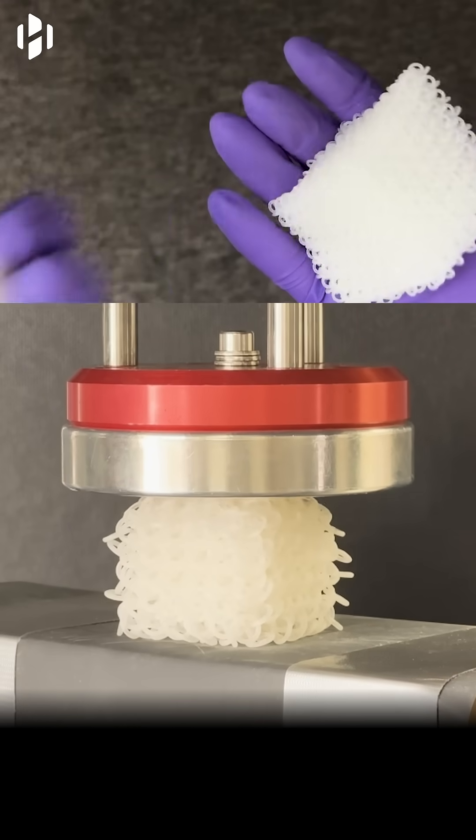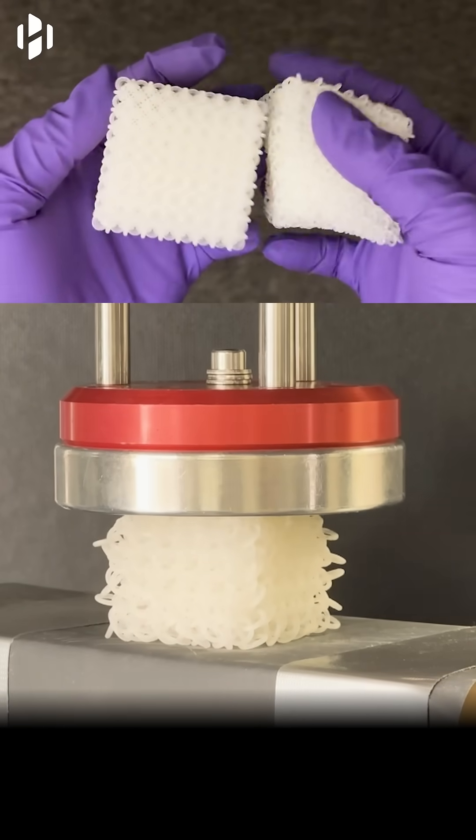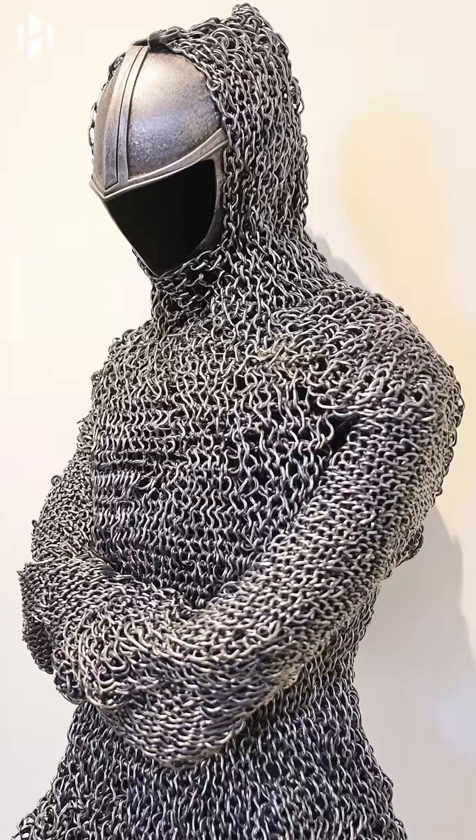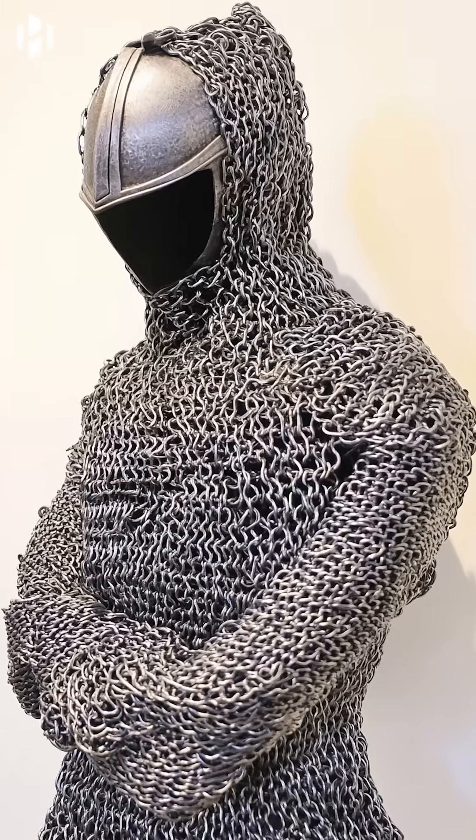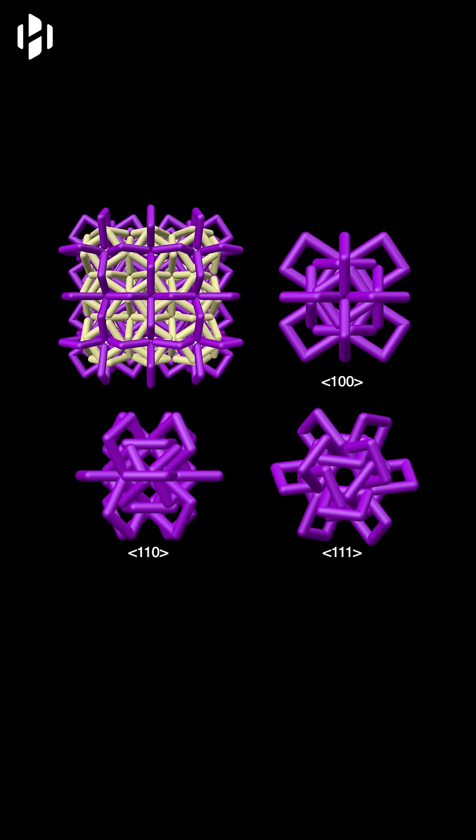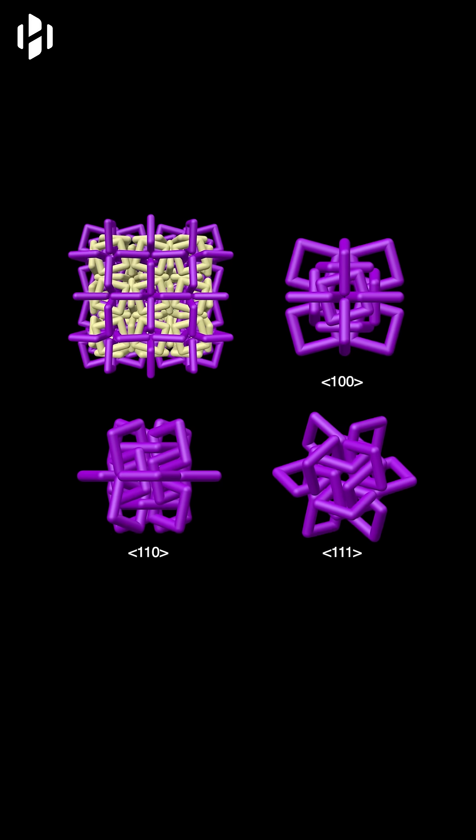It's called PAM, or polycatinated architected material. Its unique structure, inspired by chainmail, features interlinked shapes forming intricate three-dimensional networks.